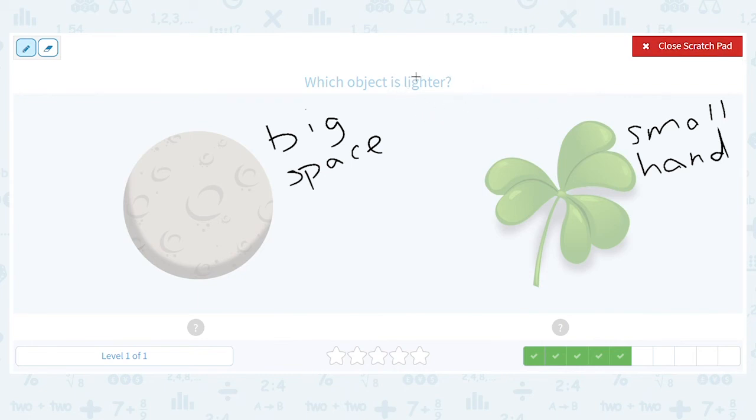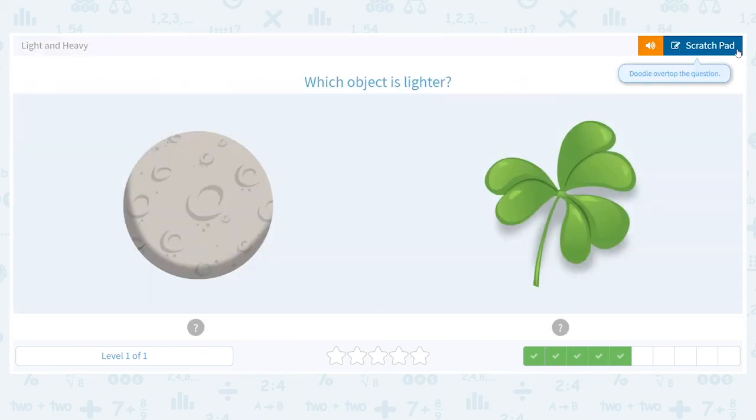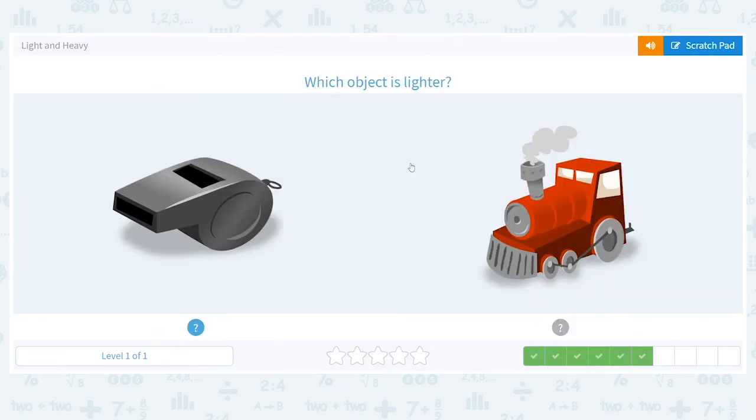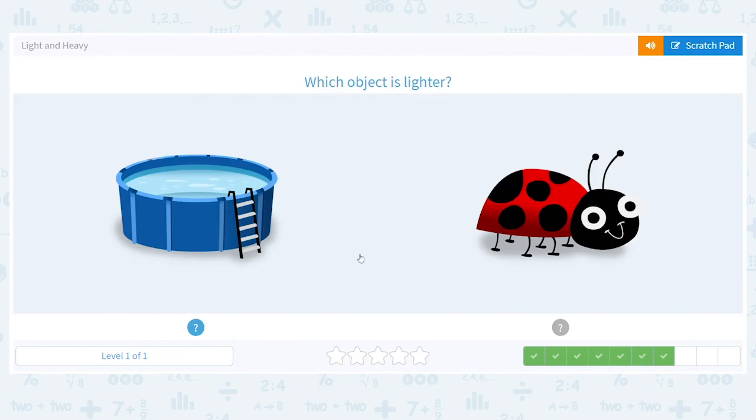Great job. Again, we're not talking heavy this time, it says which object is lighter. We have our whistle, which we said can fit in our pocket or in the palm of our hand. We can carry it around, a coach can use it for sports. And we have a train that you can travel in, you fit inside of it. So which object is lighter? Whistle. You are rocking it.